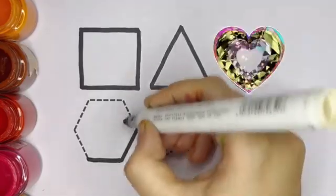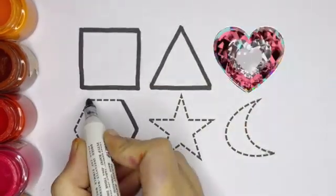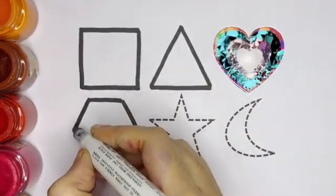Next is hexagon. Hexagon has 6 sides and 6 corners.